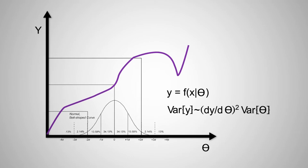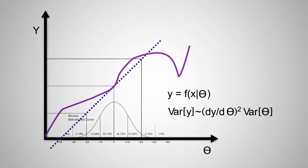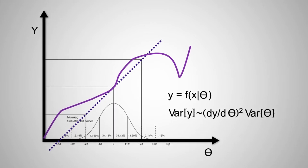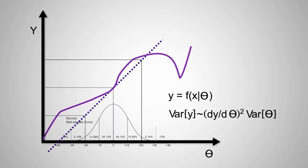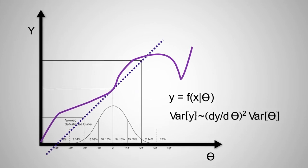Essentially, we take the derivative of that model to estimate an approximate slope around the mean. And so what we end up then doing is once we have approximated our non-linear model with a linear approximation, we can then use the same rules we had previously to understand how to propagate uncertainty in linear models.